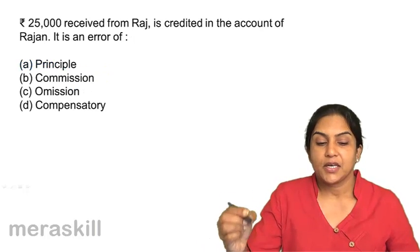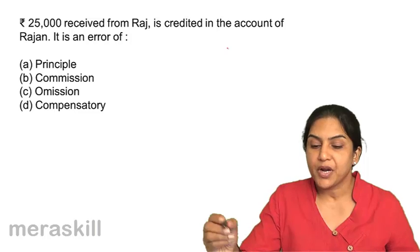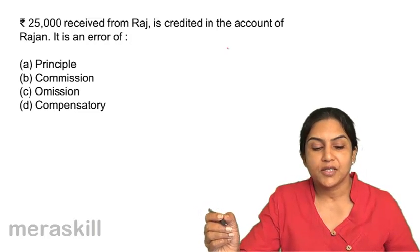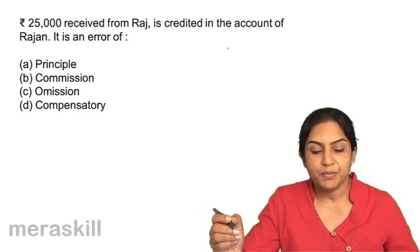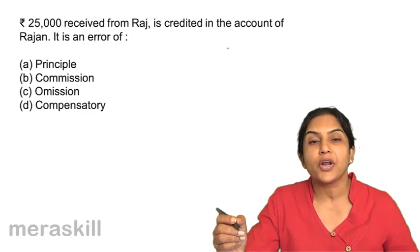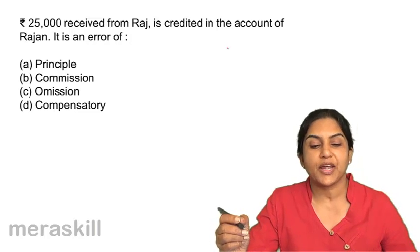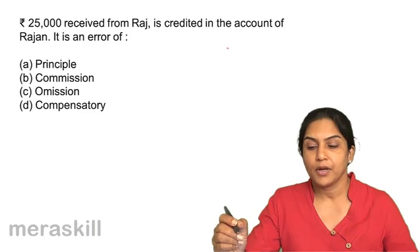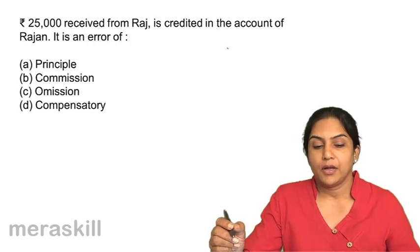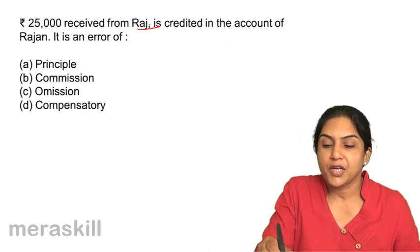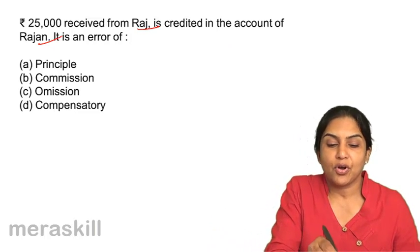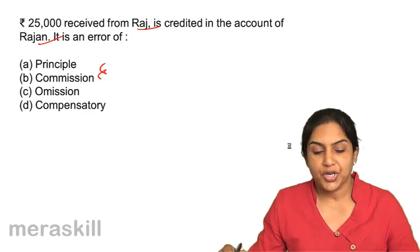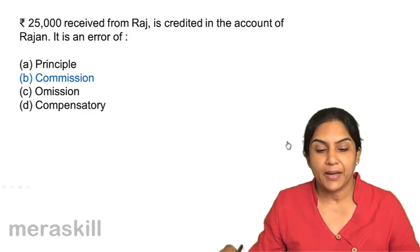Next question: ₹25,000 received from Raj is credited to the account of Rajan. Is this an error of principle, commission, omission, or a compensatory error? The amount received from Raj was taken to the wrong account — that should be an error of commission. Correct answer: B.